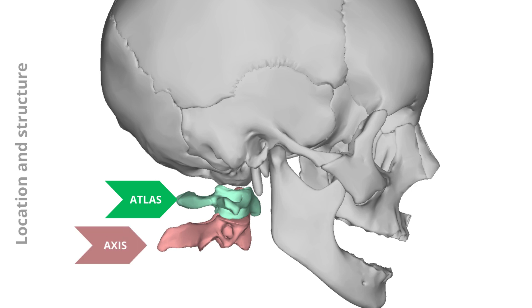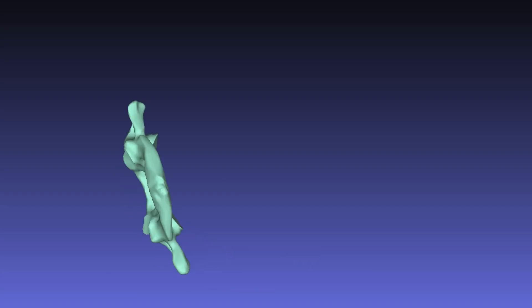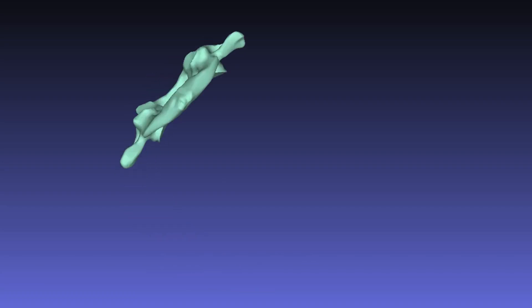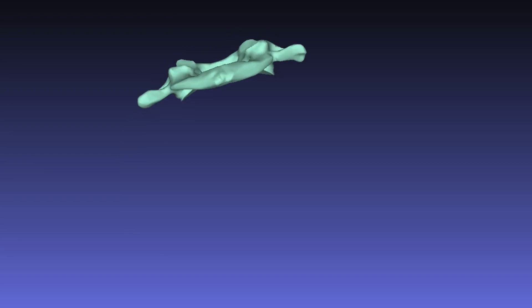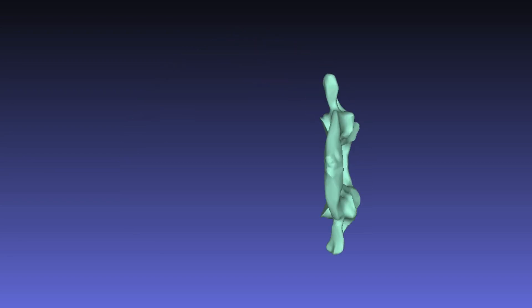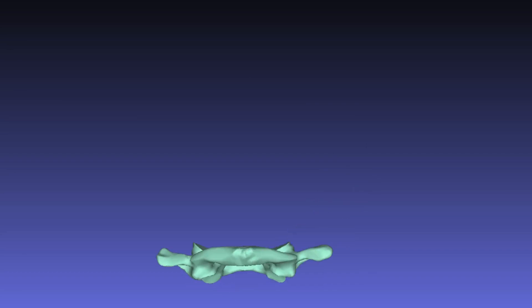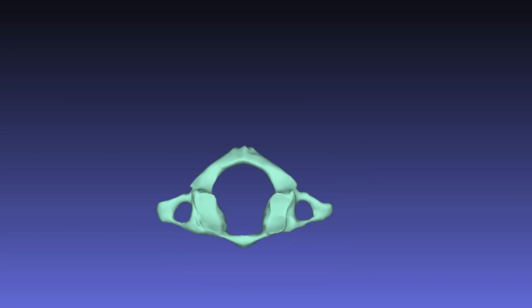Classified as an atypical vertebra, the atlas is a ring-like bone that does not contain a vertebral body or spinous process. The atlas consists of anterior and posterior arches connected by a lateral mass on each side instead of a vertebral body. Each lateral mass bears articular facets on the superior and inferior sides and projects a transverse process on the lateral side. A ring-like anatomical space called the vertebral canal, which provides passage for the spinal cord, is formed centrally by the anterior and posterior arches and the two lateral masses.